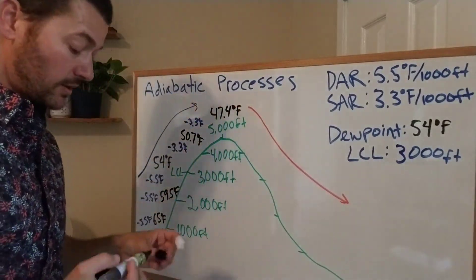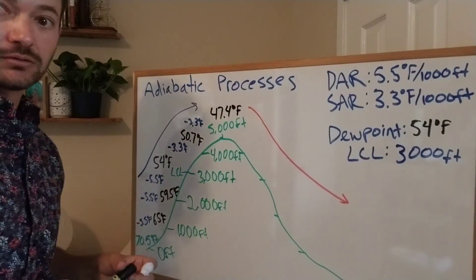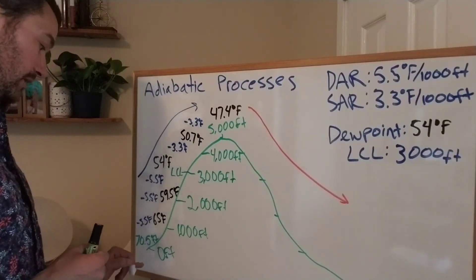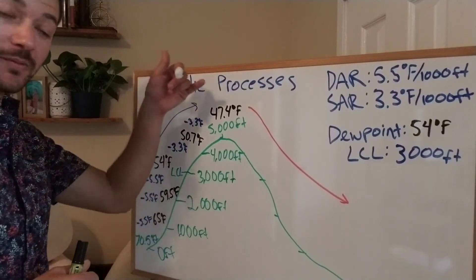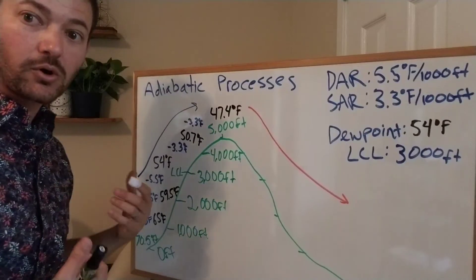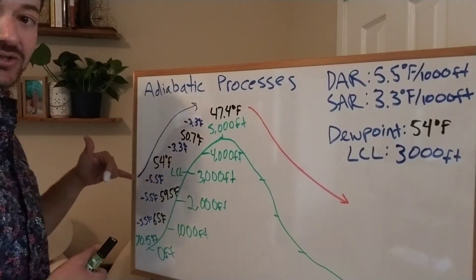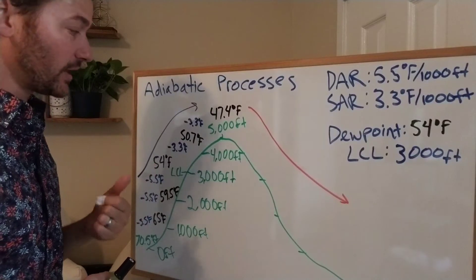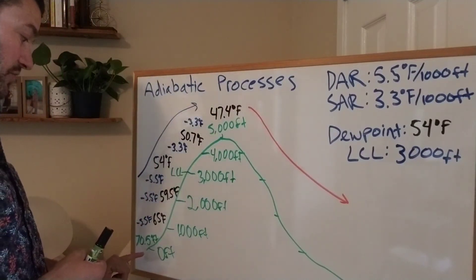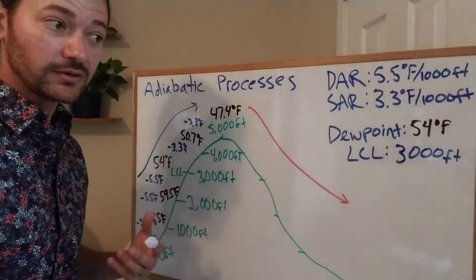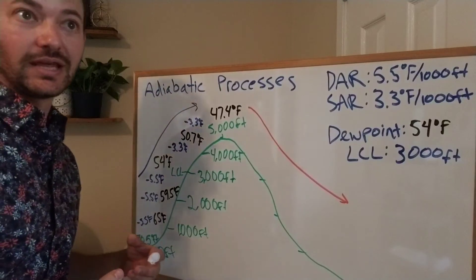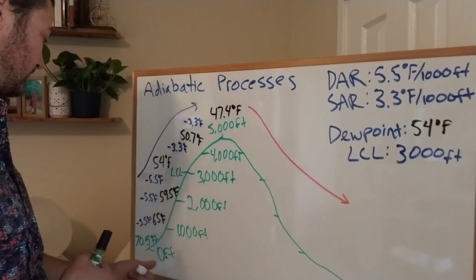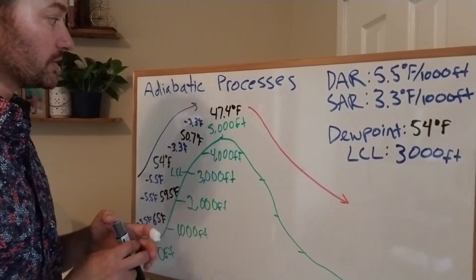If you go hiking and it's a nice 70-degree day at sea level, at the top of the mountain you'll want a jacket because it'll be 47.4 degrees or colder. If it were dry the whole way, it'd be even colder since you'd subtract 5.5 those last two times. If you go up Mount Baldy, which is 10,000 feet in LA County, 10 times 5.5 means it's going to be much colder at the top — that's why there's snow on Mount Baldy so late into the year.